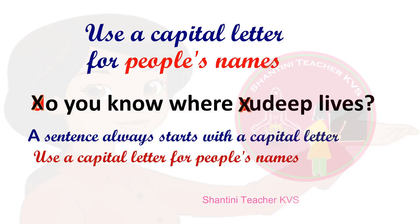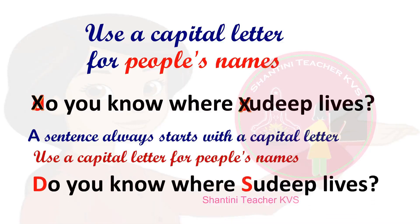Now think: how can we correct the sentence? By uppercasing the first letter of the sentence — that is, by using capital letter D — as well as by uppercasing the capital S of Sudip's name.